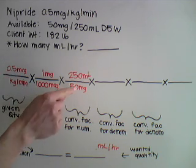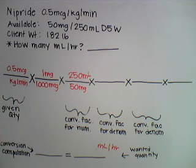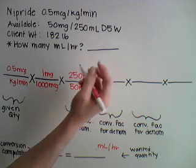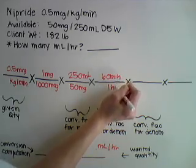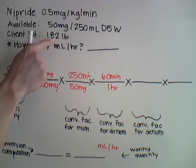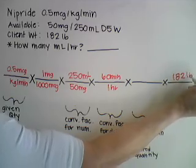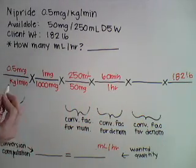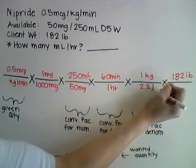We've taken care of our micrograms and our concentration, which comes in milligrams. Now we need to look at the other factors in the equation: kilograms and minutes. We're going to start by tackling the minutes. We know that 60 minutes is equal to 1 hour, and we are looking for hours in our wanted quantity. Next, we're going to tackle the kilograms. We know that our patient weighs 182 pounds, and we'll plug that into our equation. But we need to convert those pounds to kilograms. We know that for every 1 kilogram, it is equal to 2.2 pounds.